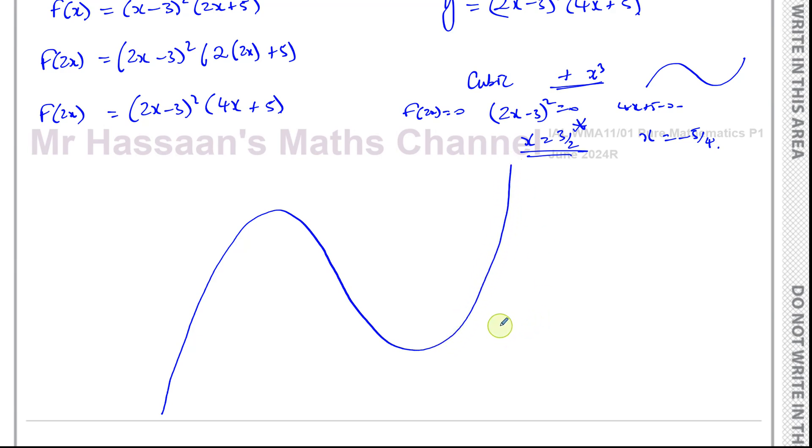Now I know that when X equals 3 over 2, which is 1.5, and this is minus 1.25, we have a repeated root. When you have a repeated root, the graph turns on the X-axis.